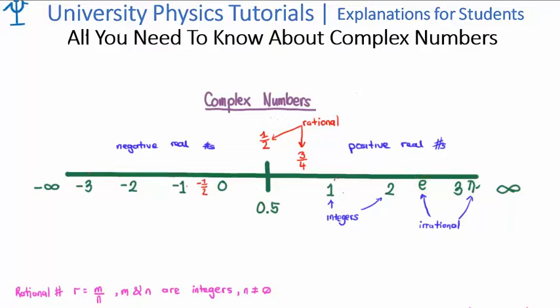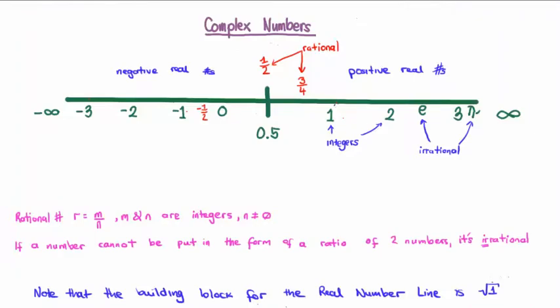Now what happens when we extend the positive real number line in the negative direction? Well we are going to get negative integers such as minus 1 and minus 3. We are also going to get negative rational numbers and negative irrational numbers. Note that the building block for the real number line is the square root of plus 1, which is simply 1.